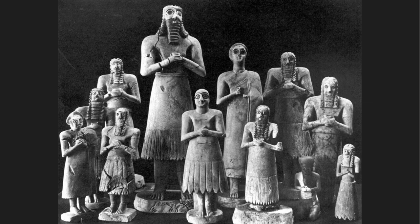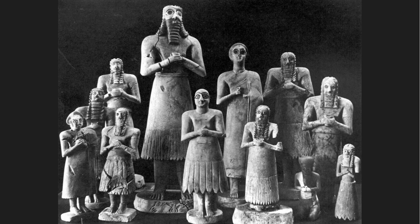Here are our votive figures from Sumeria. We have those very cylindrical, almost ice-cream-cone shapes. We can see that very stylized ridged beard and prominent eyebrow bone. They are very frontal — more detailed on the front than on the back. Now let's move on to the Code of Hammurabi.